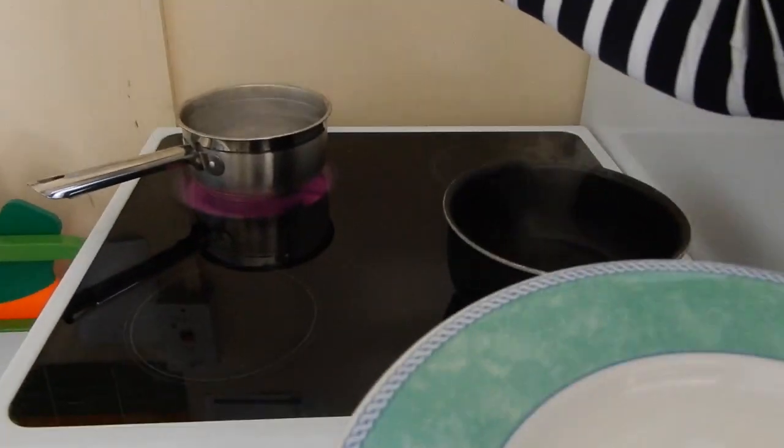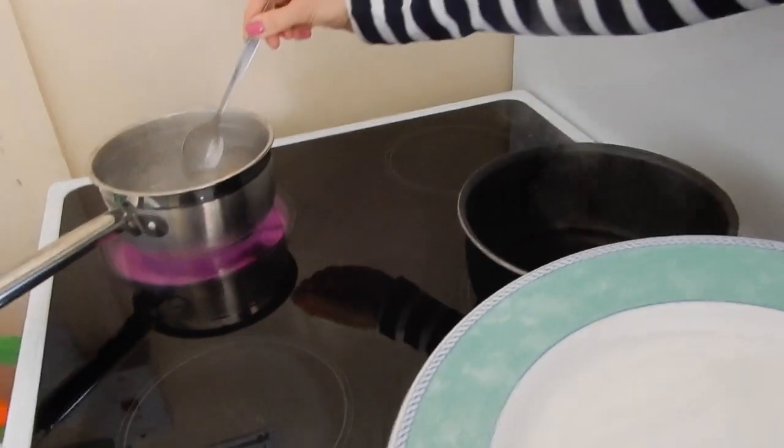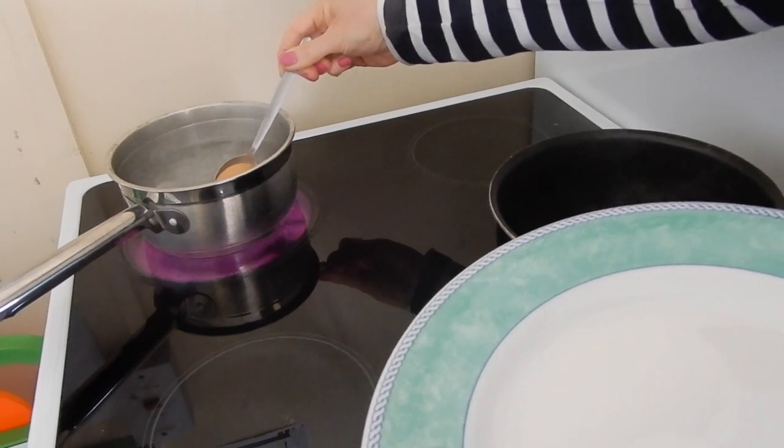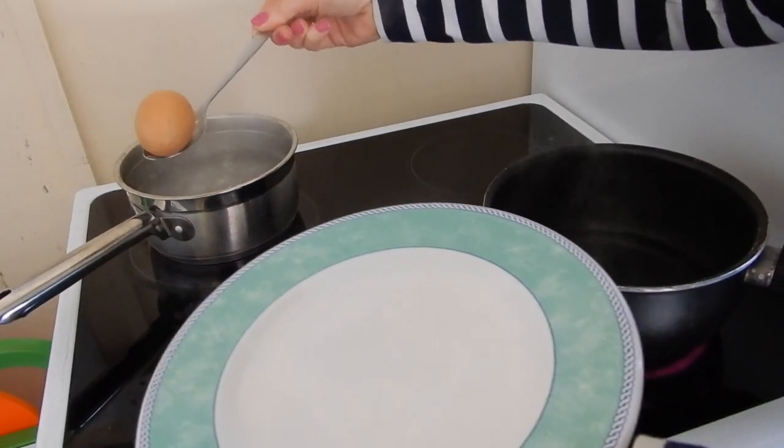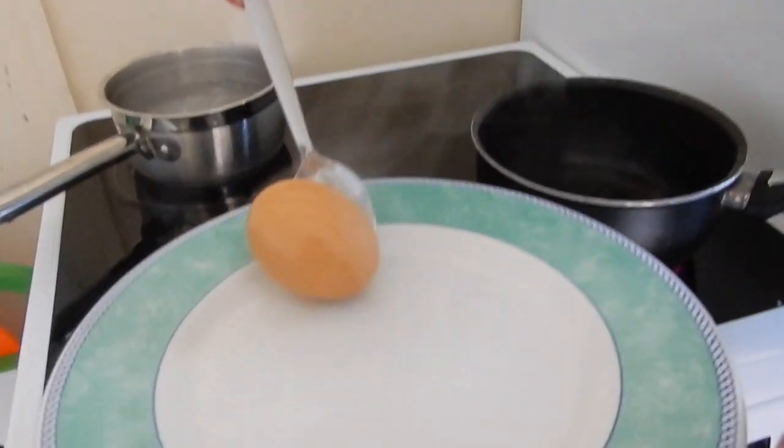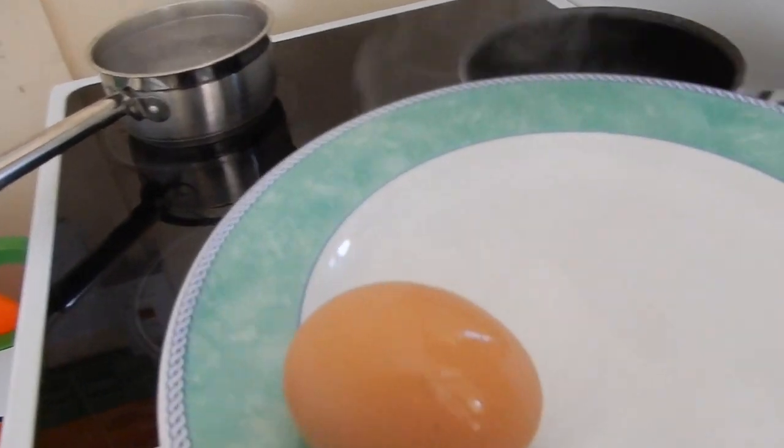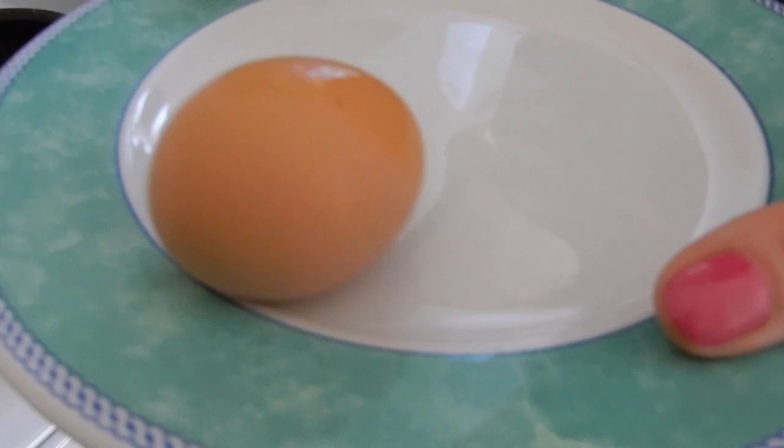Now I'm going to, and an adult will probably need to do this for you, I'm going to spoon the egg out of the water, careful not to bring any hot water with me, bringing the egg over like this. Normally you'd put it in your egg cup to stop it rolling around like mine is.